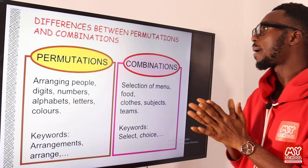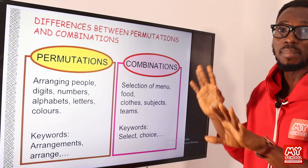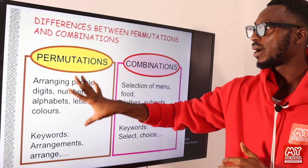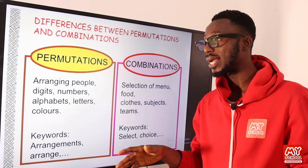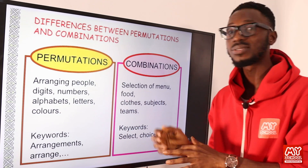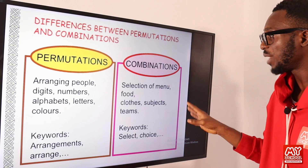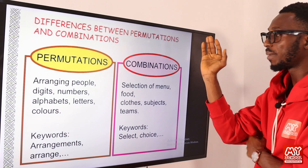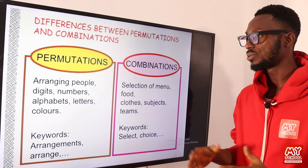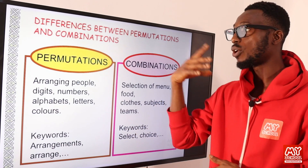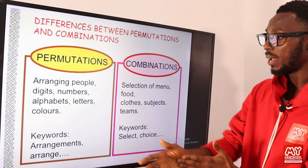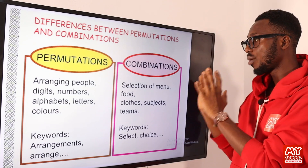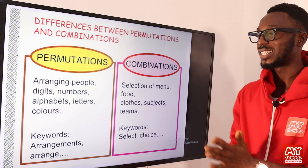More differences between permutations and combinations — this is basically about vocabulary. For permutation, it's about arranging people, digits, numbers, alphabets, letters, colors, and so much more. For combination, this is about selection of menu, food, clothes, subjects, and themes — that is basically just about selection. So when you see keywords like 'arranged' in a question, that refers to permutation; when you see 'select' or 'choice,' we are referring to combination.